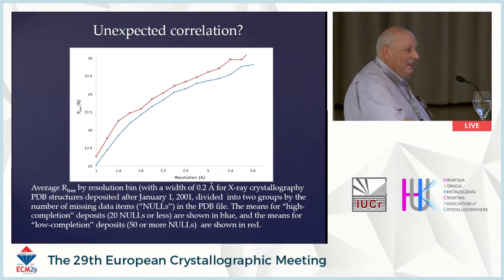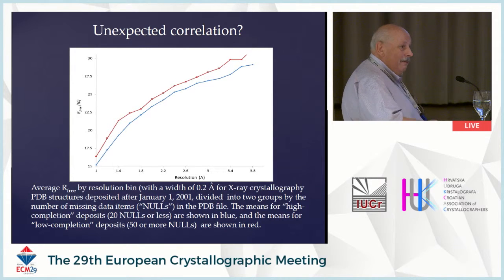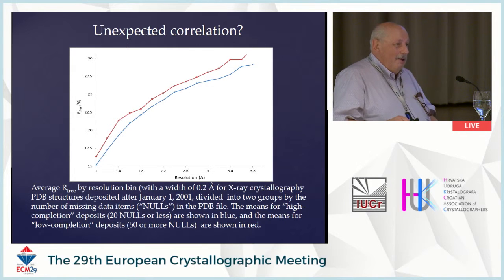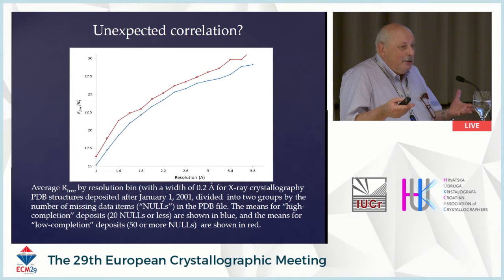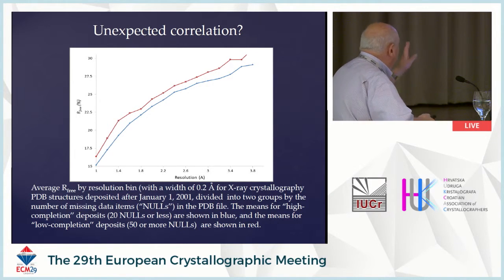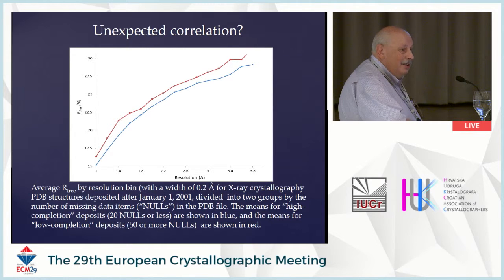If you compare R3 versus resolution for PDB deposits which have the highest number of nulls and the lowest number of nulls, you have very significant correlation over all resolutions. It means that you have depositors who know something or depositors who don't know something. We looked at several thousands of datasets created and didn't examine this particular comparison in detail.